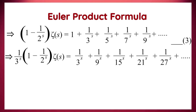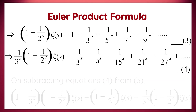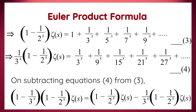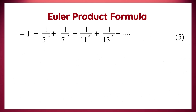We repeat the same process with equation 3, multiplying both sides by its second term, that is, 1 over 3 to the power s. This gives: (1 over 3 to the power s) times (1 minus 1 over 2 to the power s) times zeta(s) equals 1 over 3 to the power s, plus 1 over 9 to the power s, plus 1 over 15 to the power s, and so on. Mark this as equation 4. We then subtract equation 4 from equation 3, which provides: (1 minus 1 over 3 to the power s) times (1 minus 1 over 2 to the power s) times zeta(s) equals 1 plus 1 over 5 to the power s, plus 1 over 7 to the power s, plus 1 over 11 to the power s, and so on.